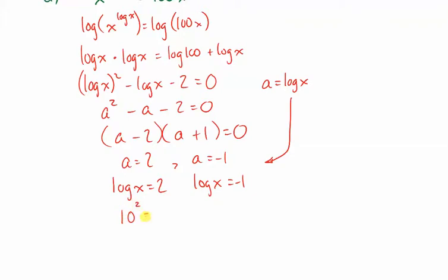10 exponent 2 is x. So, x is 100 is 1 root. Here, 10 exponent negative 1 is x. So, x equals 1 tenth is a root.